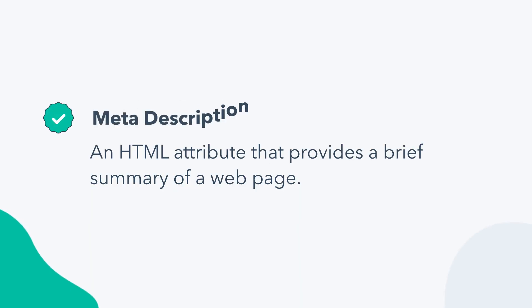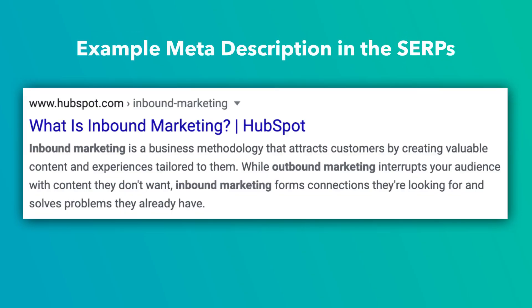Let's kick things off by talking about meta descriptions. When you conduct a search, how do you decide which result to click on? The page title and the meta description probably play huge roles in deciding that a resource is helpful to you. A meta description is an HTML attribute that provides a brief summary of a webpage. This brief snippet of text appears below the blue link in a search engine result. This description summarizes the content of the webpage linked above it.